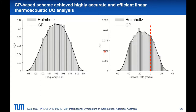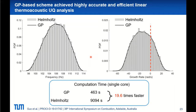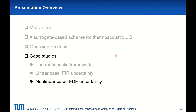Here are the results. We compare the PDF predicted by the GP-based scheme and direct Helmholtz calculations. For both frequency and growth rate, we achieved very good match. In terms of computational time, almost 20 times faster is achieved.